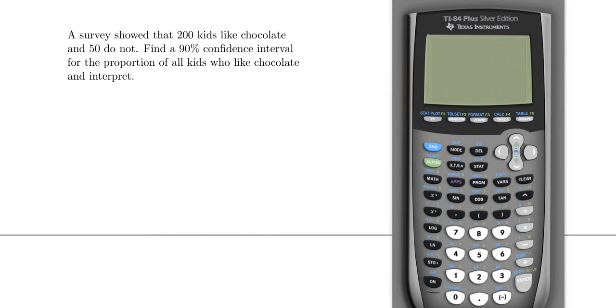A survey showed that 200 kids like chocolate and 50 do not. Find a 90% confidence interval for the proportion of all kids who like chocolate and interpret.